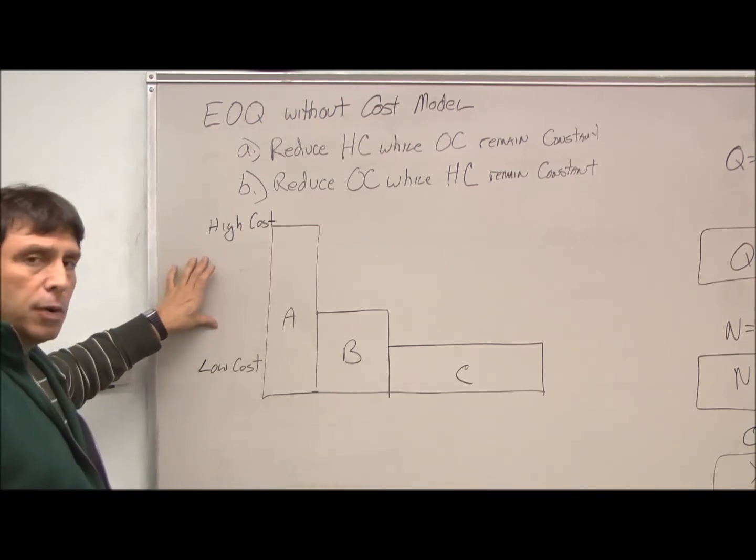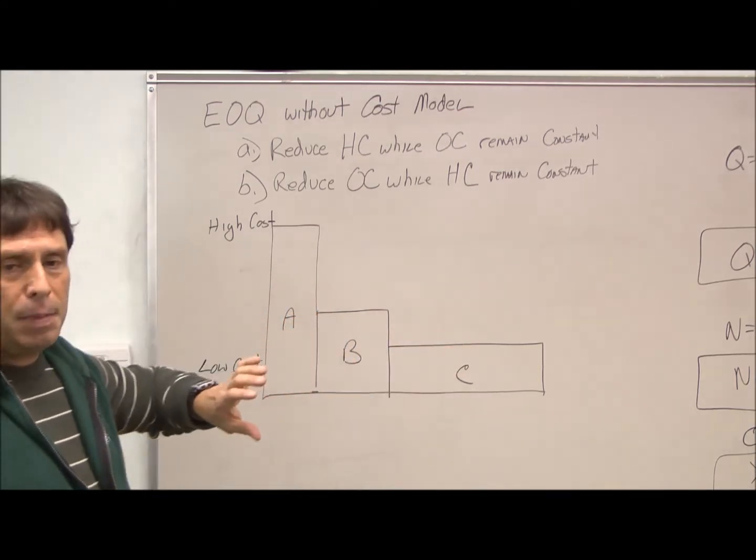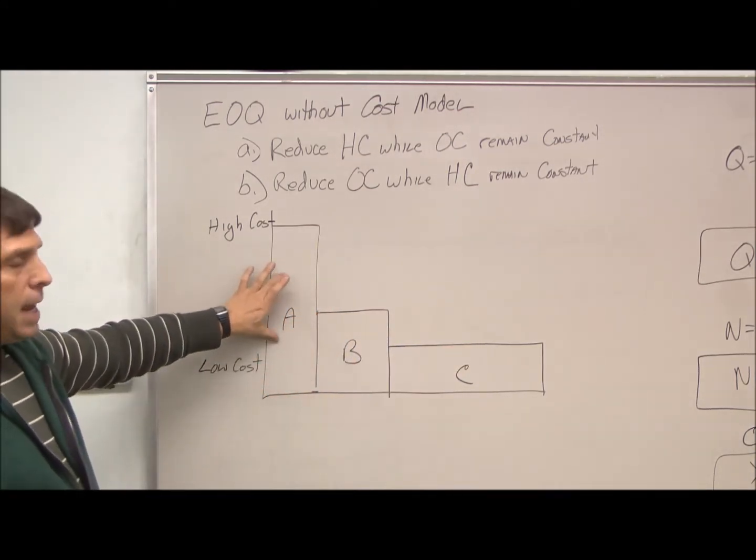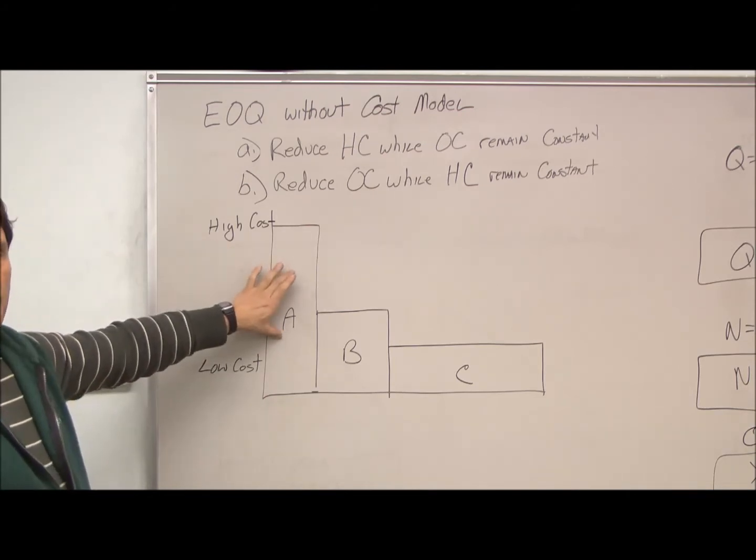Generally, when we talk about inventory models, inventory is usually some version of A, B, and C inventory. A inventory is very high cost, we don't use that much of it.